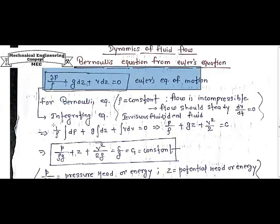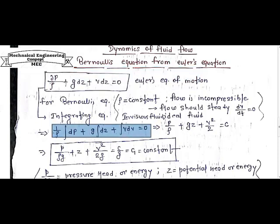After integrating, we get one by rho integration of dP plus g integration of dz plus v dv equals zero. This gives us P by rho plus gz plus v squared upon 2 equals constant.